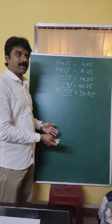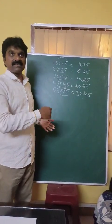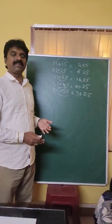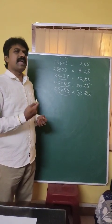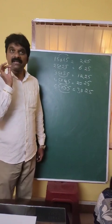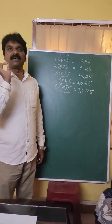Like this you can multiply 65 into 65, 75 into 75, 85 into 85, 95 into 95, 105 into 105. Any numbers which ends with 5, and the same numbers, you can easily multiply within 1 second.